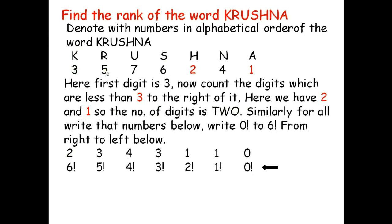Taking the next letter, R is denoted by 5. In similar manner, count the digits which are less than 5 to the right of 5. Here we have 1, 4, and 2 — so there are 3 such digits. Write down 3. For U, denoted by 7, the digits which are less than 7 to the right are 4 digits, so write down 4.